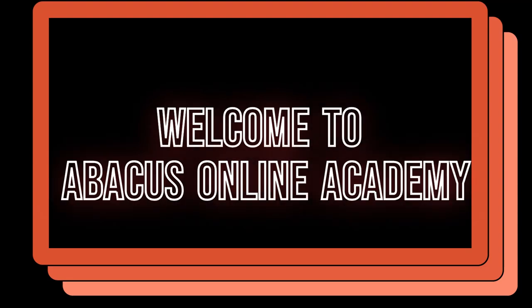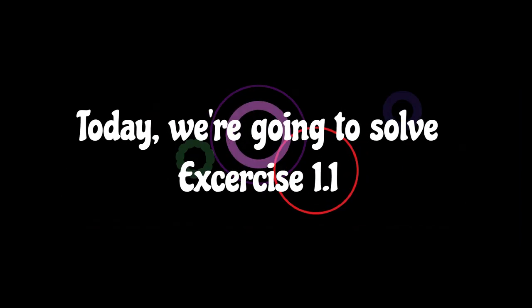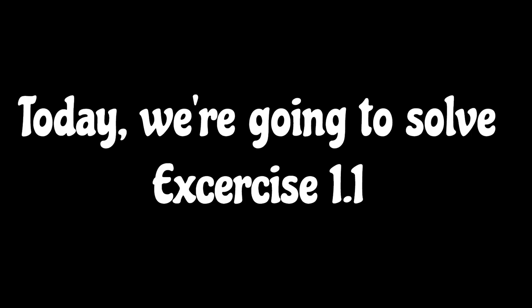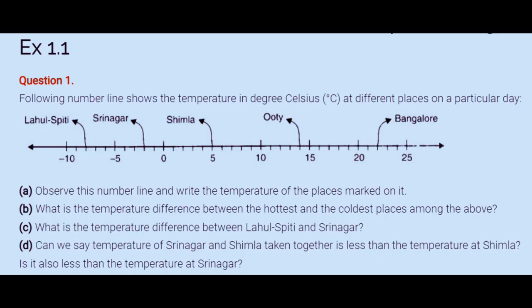Welcome to Abacus Online Academy. Today we're going to solve exercise 1.1. The first question: the following number line shows the temperature in degrees Celsius at different places on a particular day. Question A: observe this number line and write the temperature of the places marked on it.